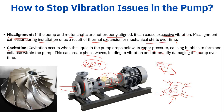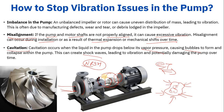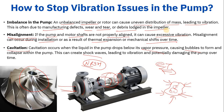We must ensure that whenever the operator takes a round, it is their responsibility to check shaft alignment. Regarding imbalance: an imbalanced impeller or rotor causes uneven distribution of mass, leading to vibration and potential casing damage. This is most often a defect from the manufacturing side, or it can result from wear and tear if solids or debris enter the impeller.